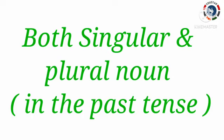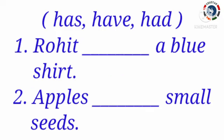Now let's see some examples for having verbs. Children, fill in the blanks with has, have, and had. First one: Rohit ___ a blue shirt. Kutis, first we have to check the noun. Here, the noun is Rohit. It is a singular noun. So we have to use has. Rohit has a blue shirt.